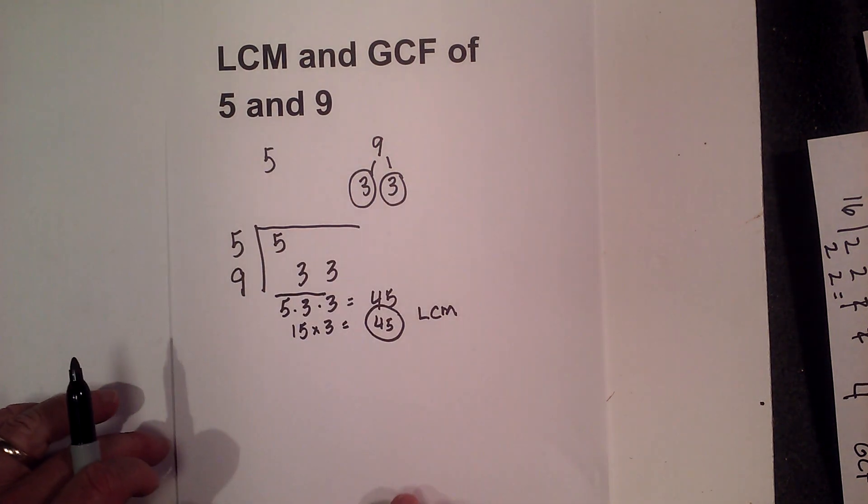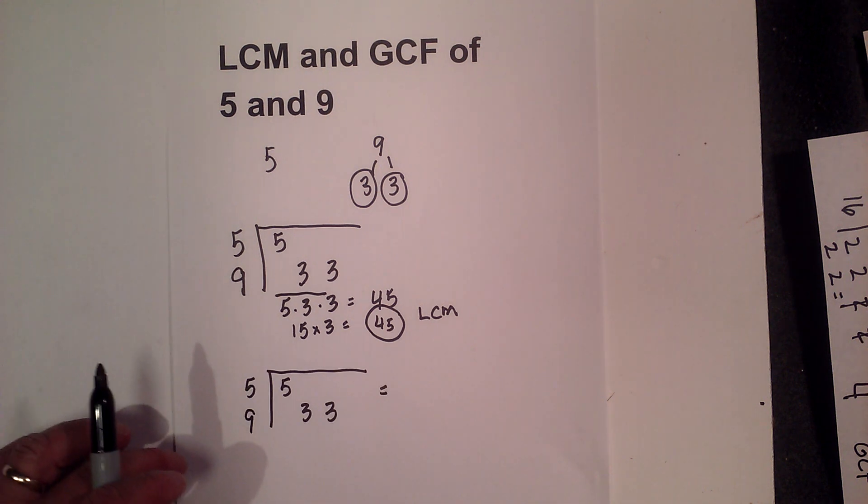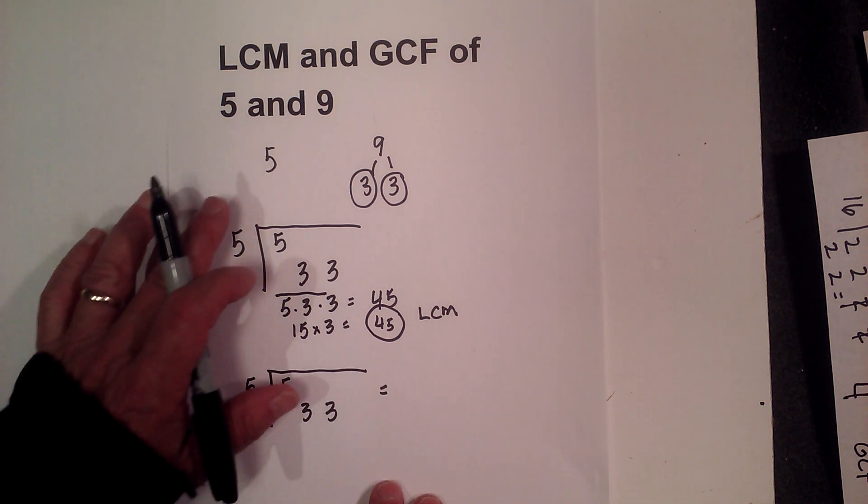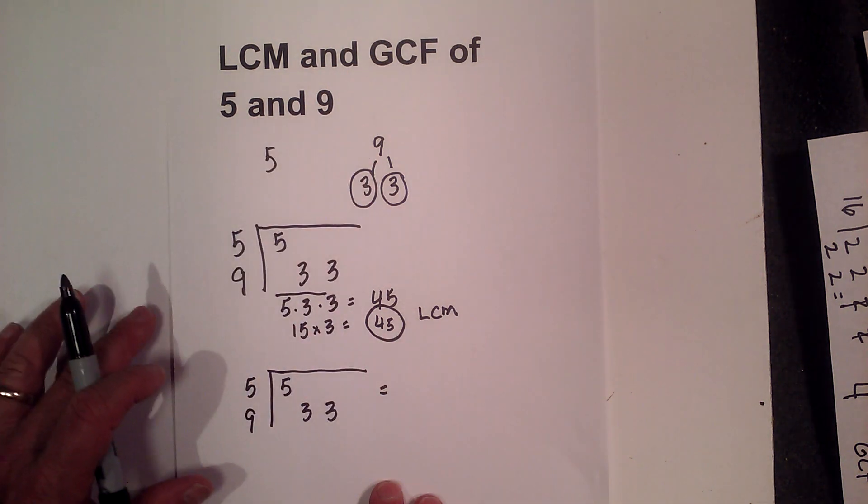Now for the GCF, I can use the very same chart. So let me rewrite it. So now, remember, for the greatest common factor, it's the least number that will multiply into both of these evenly, positive number.